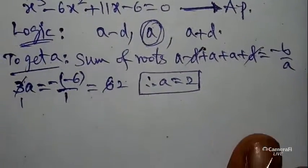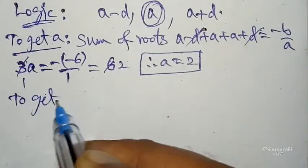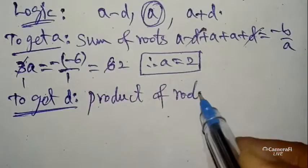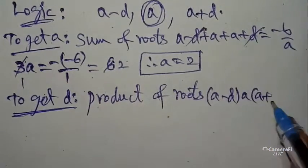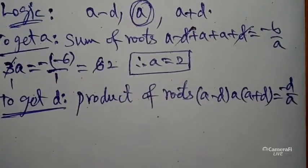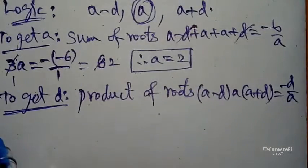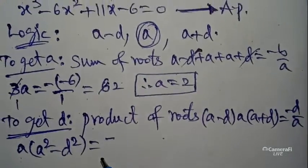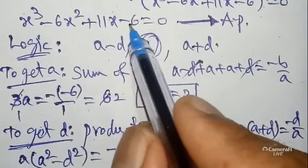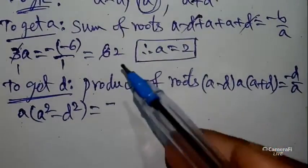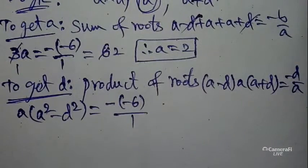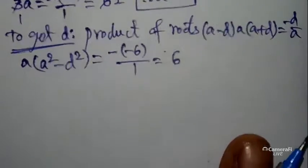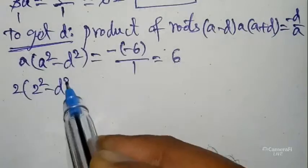We got a equals 2. Next, to find 'd', use the product of roots formula: (a minus d) times a times (a plus d) equals minus d by a. Here (a minus d)(a plus d) equals a² minus d². So the formula gives: a times (a² minus d²) equals minus d by a. According to the equation, the constant term d value is minus 6 and the leading coefficient a value is 1, so the product equals minus 6 by 1 equals 6 in magnitude.